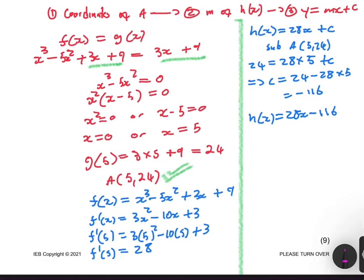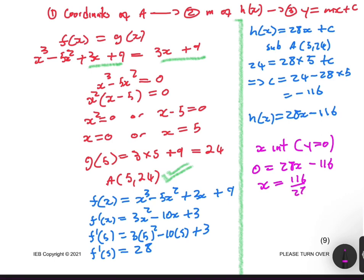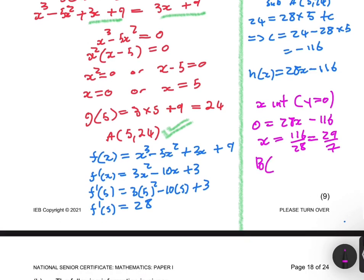We're looking for B, the x-intercept of h(x). To find the x-intercept, we let y = 0: 0 = 28x - 116, so x = 116/28 = 29/7. Therefore the coordinates of B are (29/7, 0).